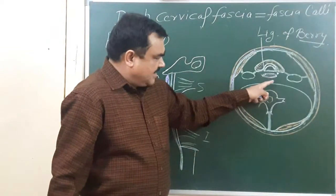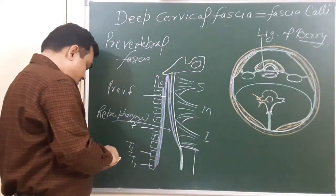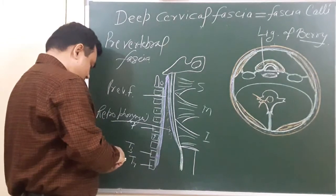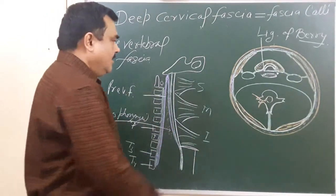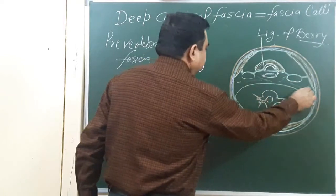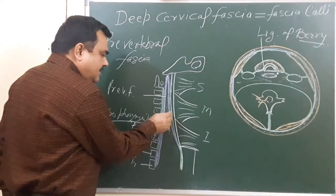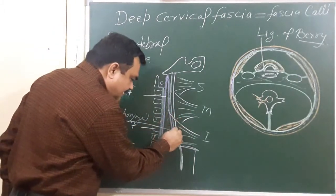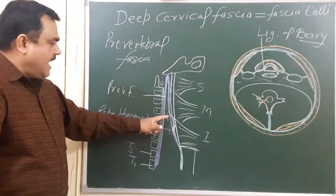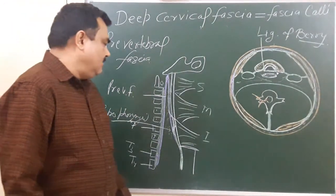This retropharyngeal space contains the pharyngeal plexus of nerves. Infection of this space may spread laterally. Also, sometimes a bulging is present in the posterior wall of the pharynx — this is the retropharyngeal abscess, which can be seen in the posterior wall of the pharynx if viewed from the anterior side. So this is all about the pre-vertebral fascia.